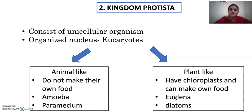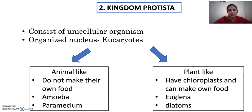Kingdom Protista consists of unicellular organisms with an organized nucleus — that is why they are eukaryotes. There are two types: animal-like and plant-like. Examples for animal-like are amoeba and paramecium. Examples for plant-like, which have chloroplasts, are euglena and diatoms.